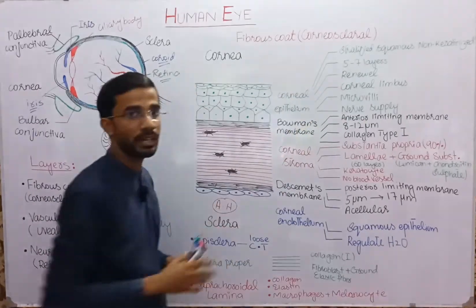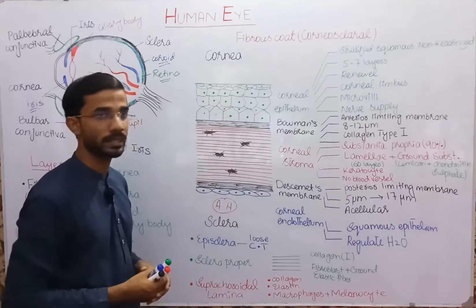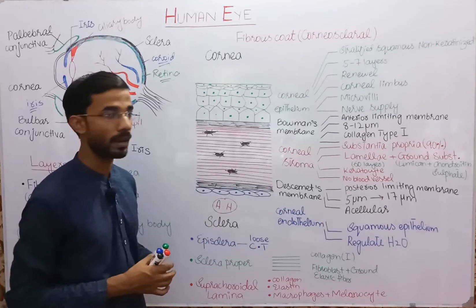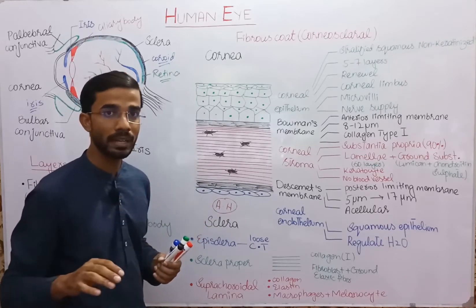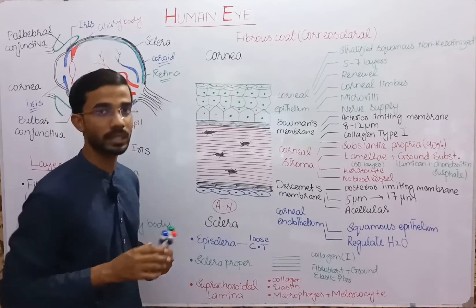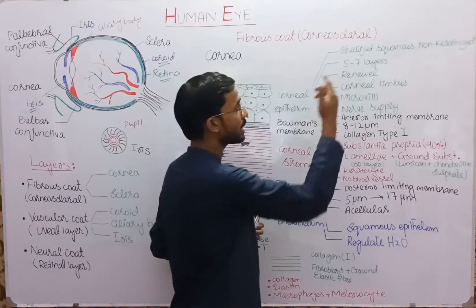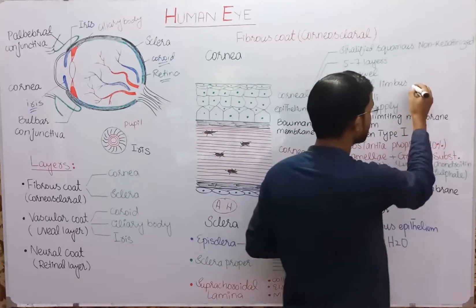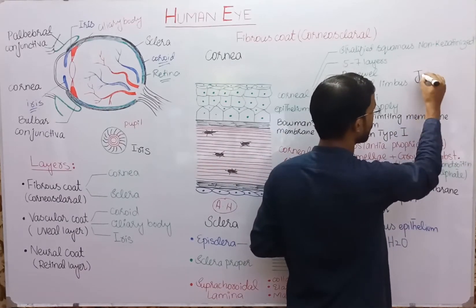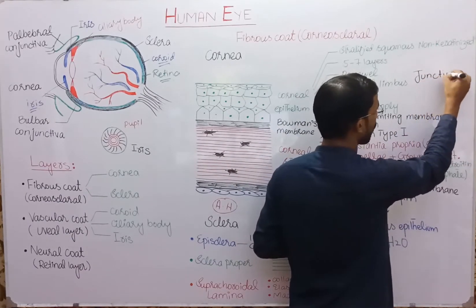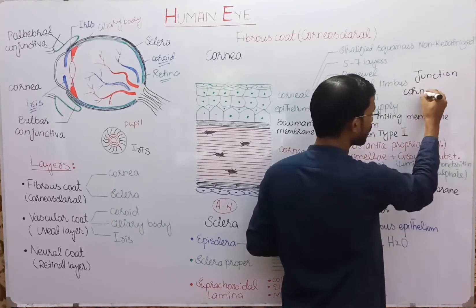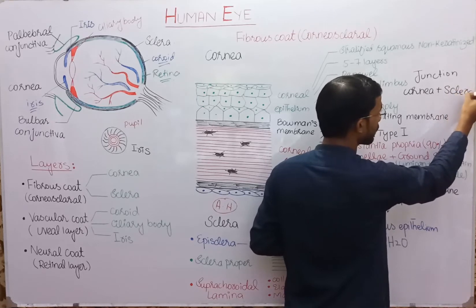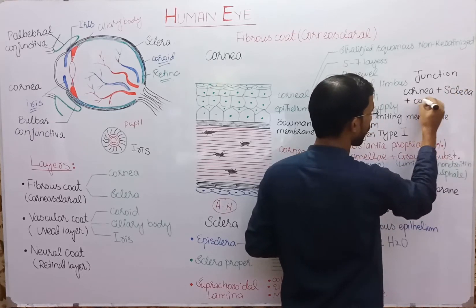Five to seven layers of cells are present in the corneal epithelium, and these cells can be renewed — they desquamate periodically. There is a corneal limbus, which is basically the junction of the cornea, sclera, and conjunctiva.